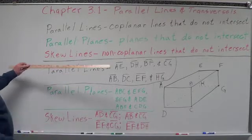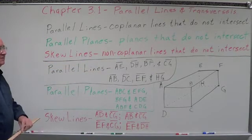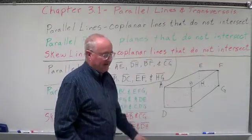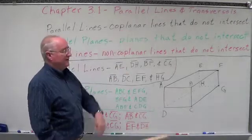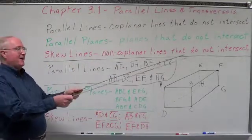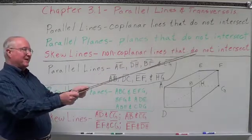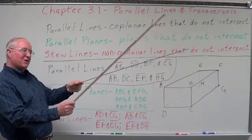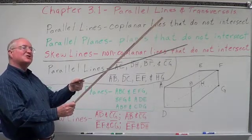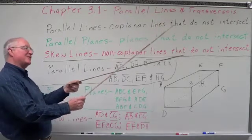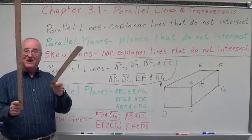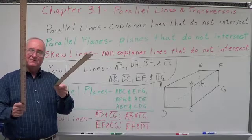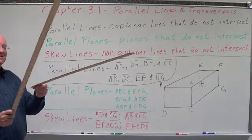Now we're going to introduce a new concept called skew lines — non-coplanar lines that do not intersect. Parallel lines are coplanar; they're on the same plane. As soon as we take one of those lines off the same plane, we get skew lines. If you look at them straight ahead, they look like they cross, but they don't, because they're on different planes.